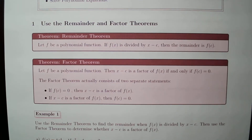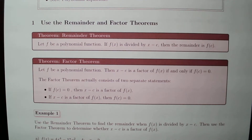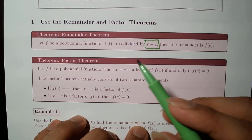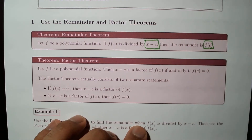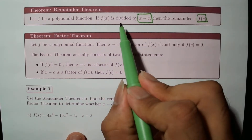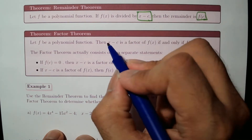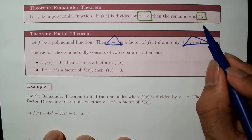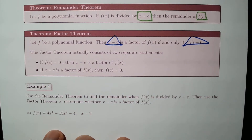Using the remainder and the factor theorems first. Suppose we have some polynomial function f of x. If we divide that polynomial by x minus c, then the remainder will be f evaluated at c. The factor theorem is a special case: if f of c equals zero, then x minus c is a factor of the polynomial. Otherwise, if we don't get a zero, we will get a remainder, and x minus c is not a factor.